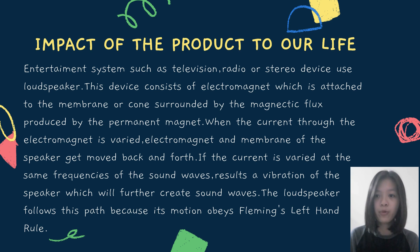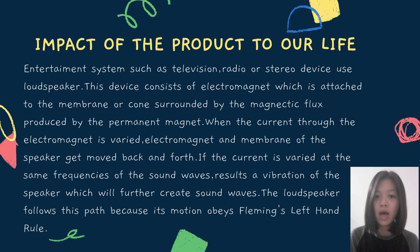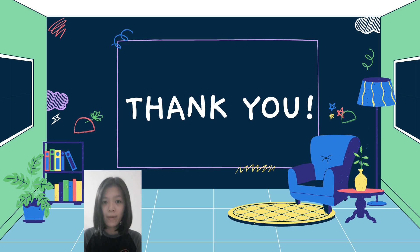Now, let's talk about the impact of the product on our life. Entertainment systems such as television, radio, or stereo devices use a loudspeaker. This device consists of an electromagnet which is attached to the membrane or cone surrounded by the magnetic flux produced by the permanent magnet. When the current through the electromagnet is varied, the electromagnet and membrane of the speaker move back and forth. If the current is varied at the same frequency of the sound wave, it creates a vibration of the speaker which will further create sound waves. The loudspeaker follows this path because its motion obeys Fleming's left-hand rule. That's all for my presentation.